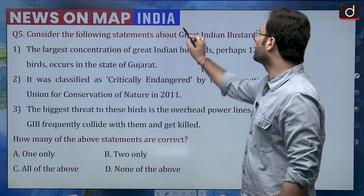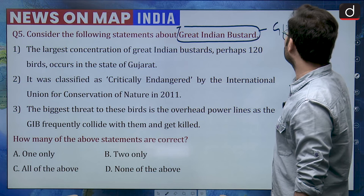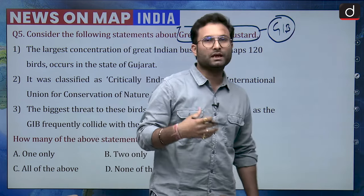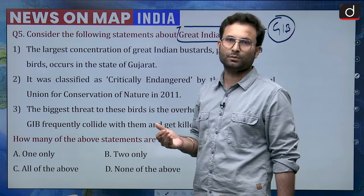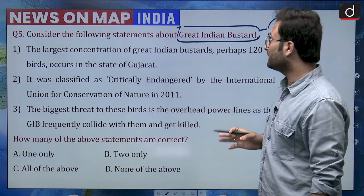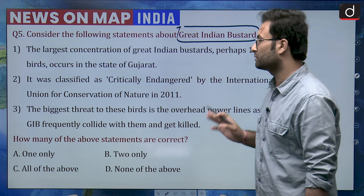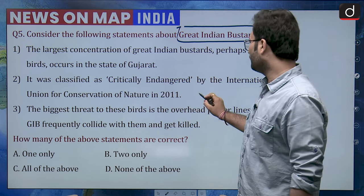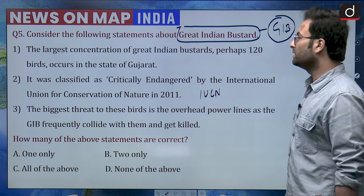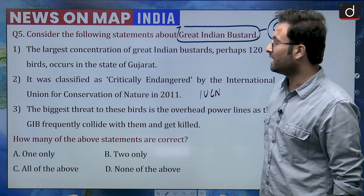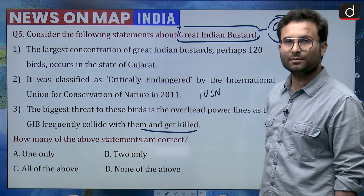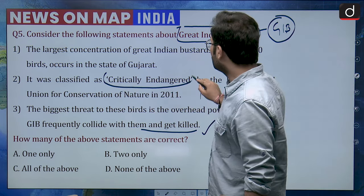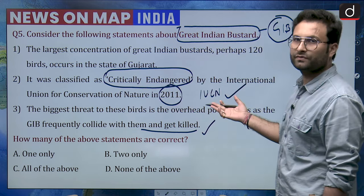Question number 5: consider the following statements about the Great Indian Bustard (GIB). The GIB was in news because birds are dying due to collisions with overhead power lines, and the Supreme Court has formed a panel to address this problem. Statement 1: the largest concentration of the Great Indian Bustard, perhaps 120 birds, occurs in the state of Gujarat. Statement 2: it was classified as critically endangered by IUCN in 2011. Statement 3: the biggest threat to this bird is overhead power lines, as the GIB frequently collides with them and gets killed.